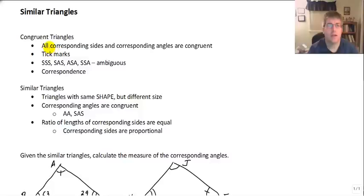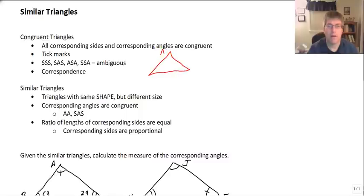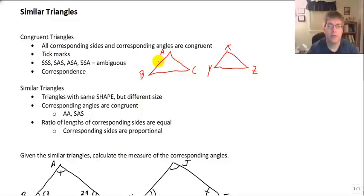You might remember from geometry that in congruent triangles all the corresponding sides and all the corresponding angles are congruent, and we denote this by tick marks. So if we had a couple of triangles — triangle ABC and triangle XYZ —